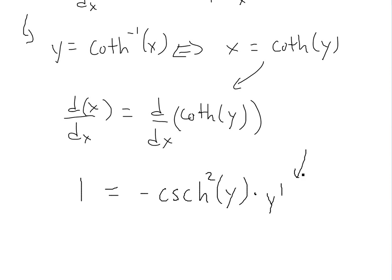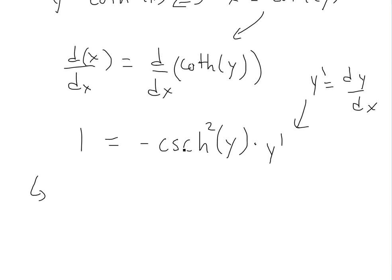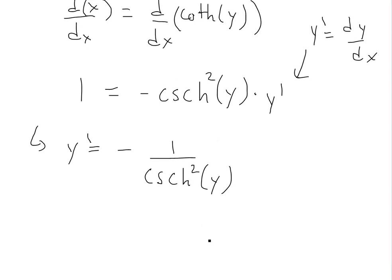Make sure you watch the earlier video for the proof of getting the derivative of hyperbolic cotangent to negative hyperbolic cosecant squared of y. So now we solve for y prime by dividing, and we get negative 1 over hyperbolic cosecant squared of y.